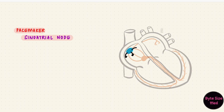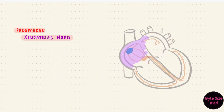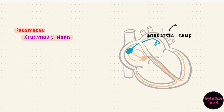Impulses get generated here and spread out. The SA node is connected to the atrial contractile cells, which start depolarizing. These contractile cells are connected to each other through gap junctions, allowing ions to spread between cells so they can depolarize and contract together. A wave of depolarization spreads through the atria starting from the right atrium. There's also a special interatrial band called Bachmann's bundle that directly connects the right and left atria for faster spread of impulses.